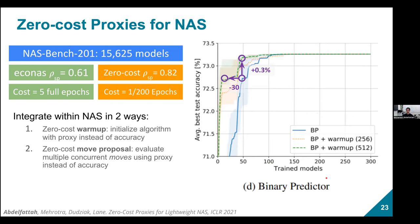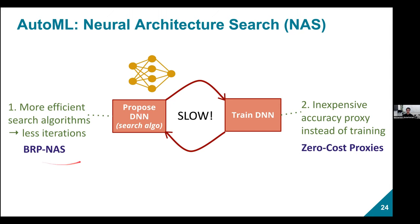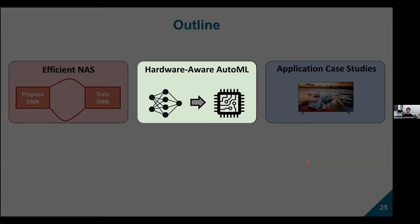So we now have zero-cost proxies with empirical evidence that they signal network quality, and a way to integrate them into four popular NAS algorithms as a pure speedup. These are the two key contributions for efficient NAS: binary relation prediction for more efficient search, and zero-cost proxies to speed up the evaluation phase.